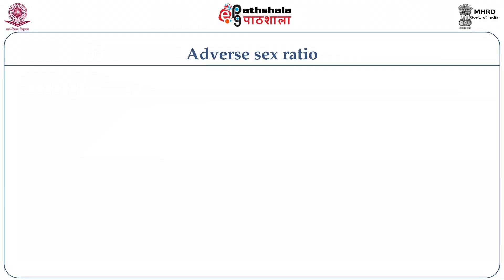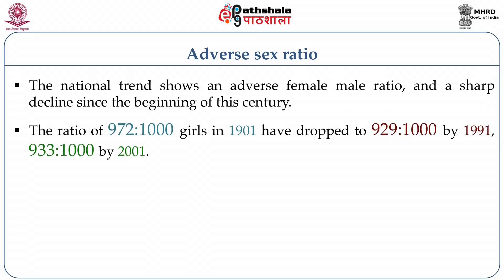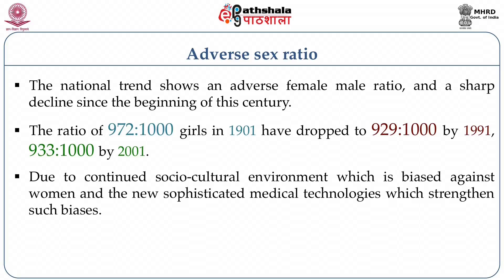Another major issue in contemporary India is the adverse sex ratio. The national trend shows a sharp decline from the beginning of this century. For every thousand boys, in 1901 we had 972 girls, and by 1991 the ratio dropped to 921 per 1000. By 2010, it is about 914 girls for every thousand boys. Because of the continued sociocultural environment biased against women, new sophisticated medical technologies have also played a major role in strengthening this bias and creating this adverse female ratio.